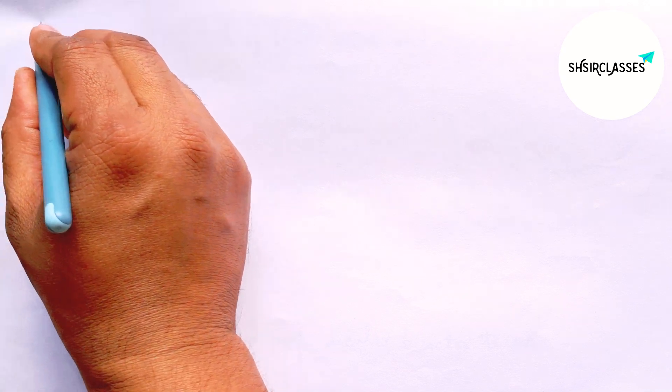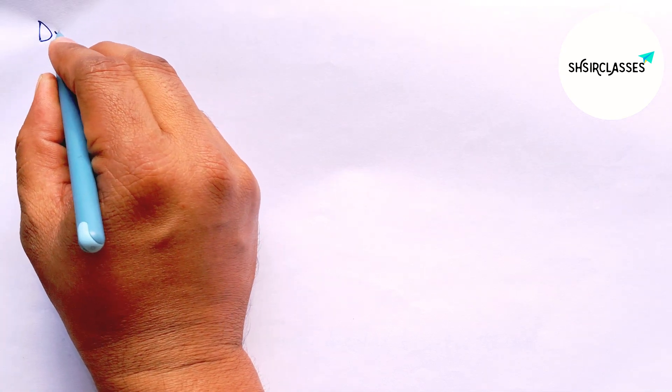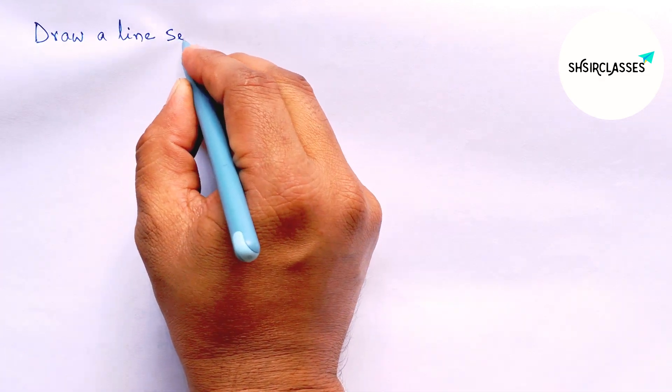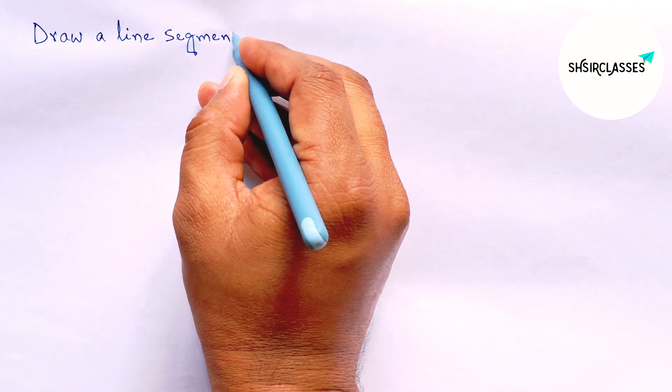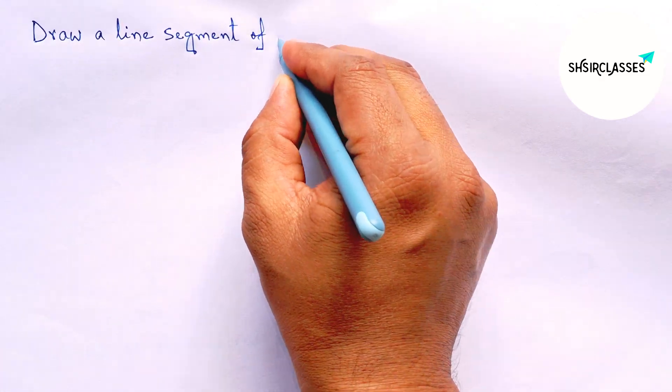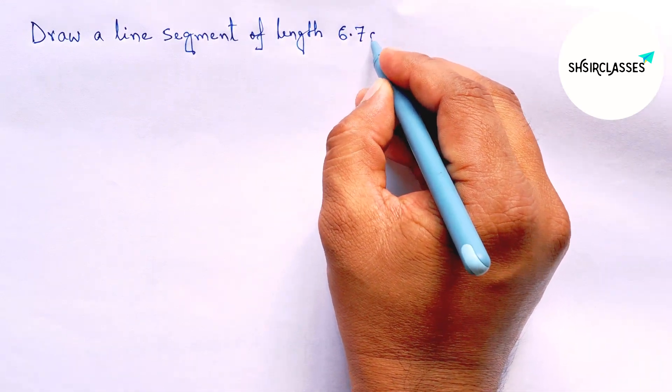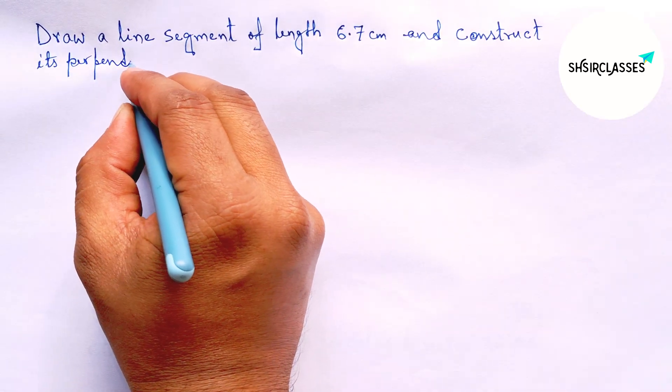Hi everyone, welcome to Jayshare classes. Today in this video, we'll draw a line segment of length 6.7 cm and construct its perpendicular bisector in an easy way.